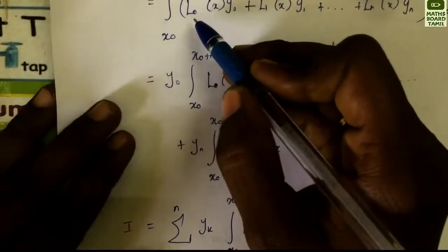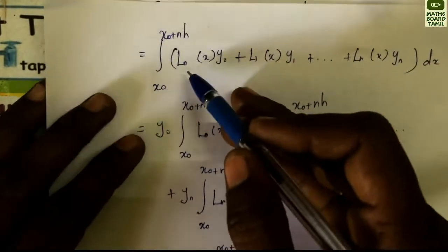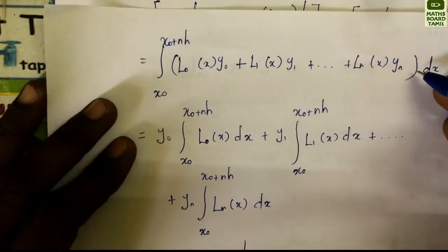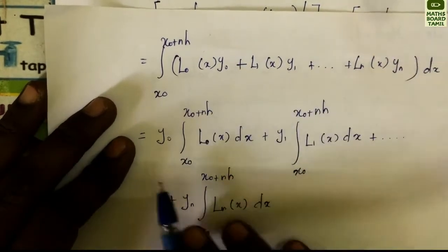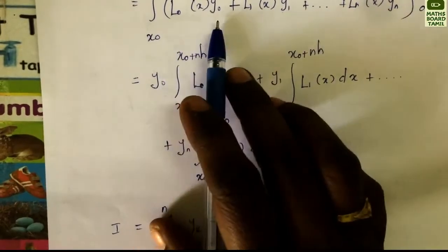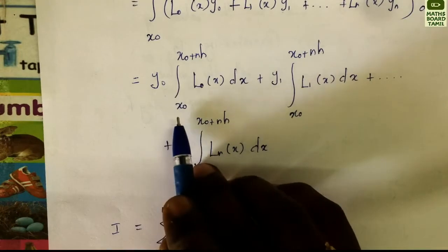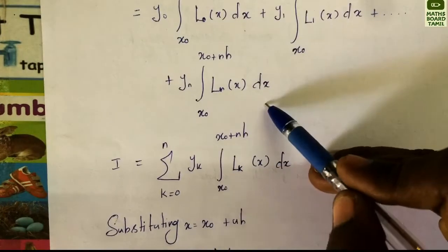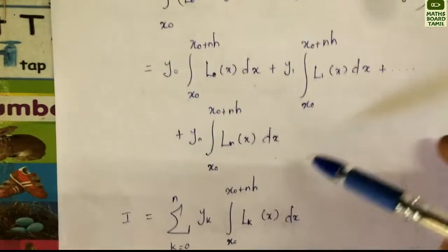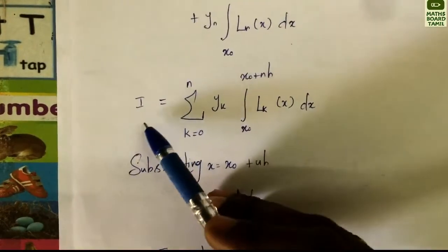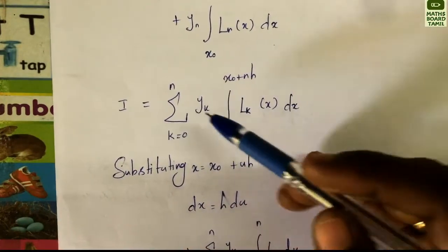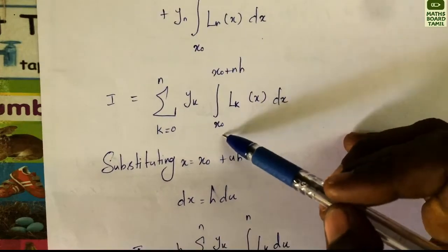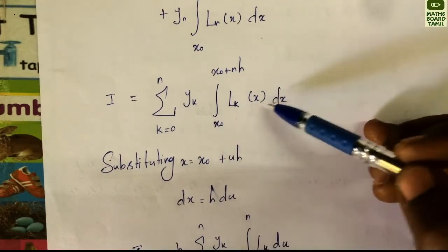So I = summation k = 0 to n of yk times the integral from x0 to x0 + nh of lk(x) dx. That is, I = summation k = 0 to n of yk times the integral from x0 to x0 + nh of lk(x) dx.